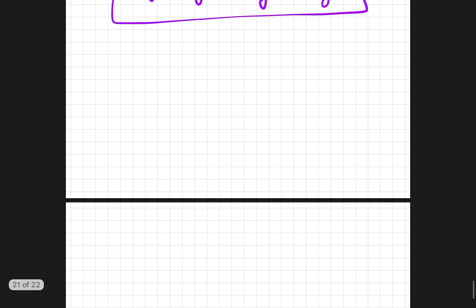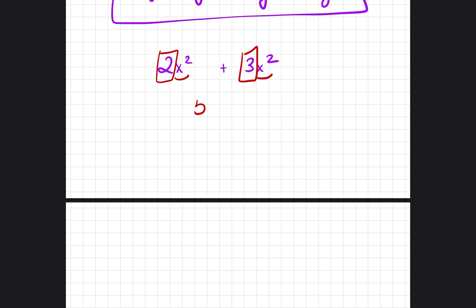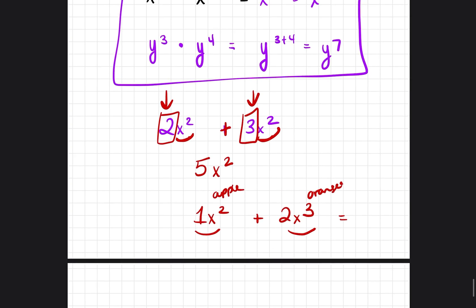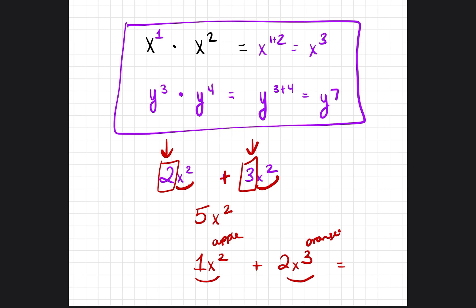What about when we're adding? For 2x squared plus 3x squared: because they have the same variable with the same exponent, you add the coefficients — 2 plus 3 equals 5 — and bring down the same variable and exponent: 5x squared. But if they're different, like 1x squared plus 2x to the third power, you cannot add them together — it's like saying 1 apple plus 2 oranges; you have to leave them separate. Those are the key rules to remember!